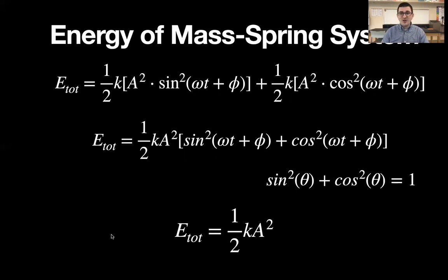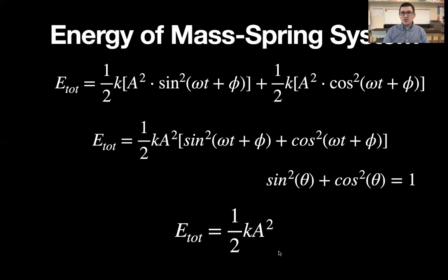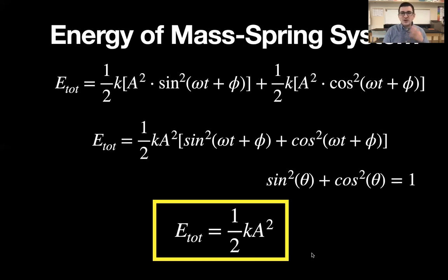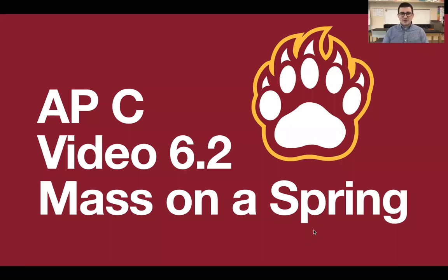All you need is the amplitude — the maximum displacement — and the spring constant, and you have the total energy of the system. This makes sense because at maximum amplitude, kinetic energy is zero and it is all spring potential energy. This equation is not on your formula sheet, but you don't need to memorize it — just think about where spring potential energy is at its max, which is when kinetic energy equals zero, and that gives you the total energy. This is Mr. Boulter wrapping up video 6.2 on mass-spring systems. We'll do practice problems in the next class — go bears!